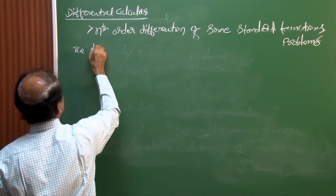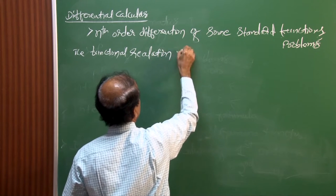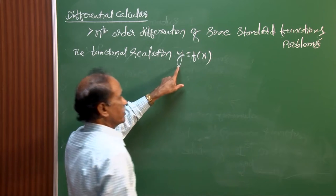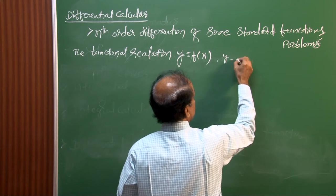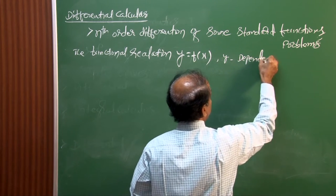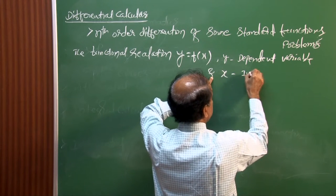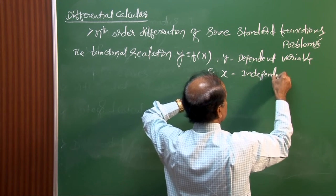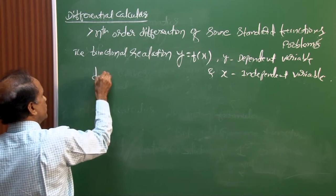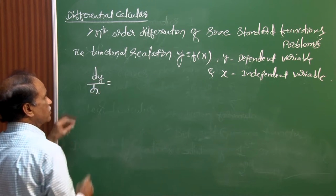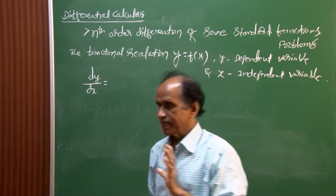Let us define the functional relation y = f(x). This contains y as the dependent variable and x as the independent variable. The expression dy/dx means the change in the value of y with respect to the change in the value of x.